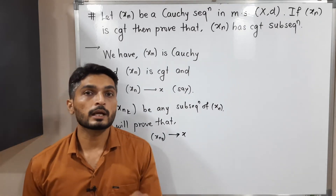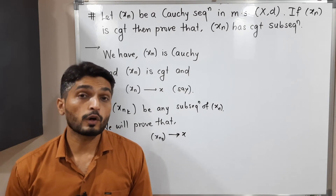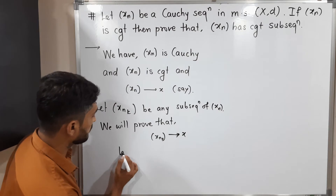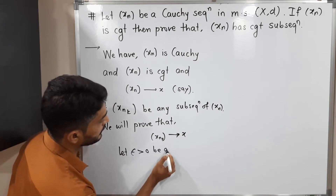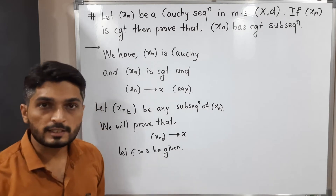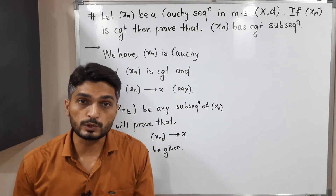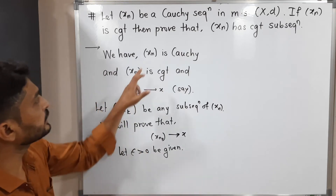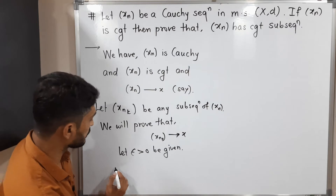We will prove that XnK converges to X using the epsilon definition. So for that, let epsilon greater than zero be given. After that, we use the given information one by one. The first piece of information is that Xn is Cauchy.